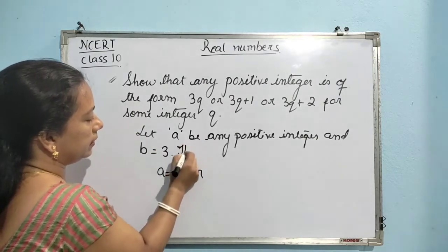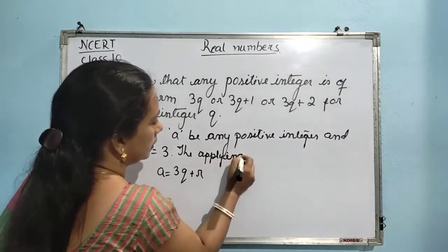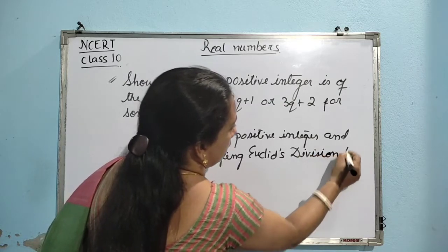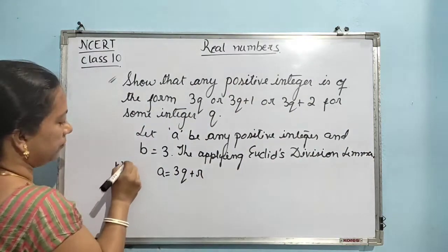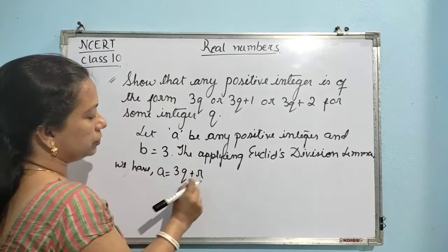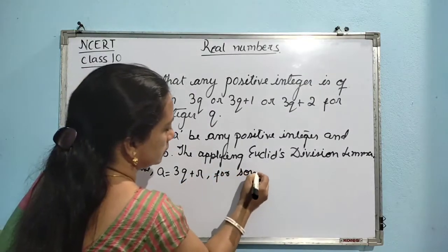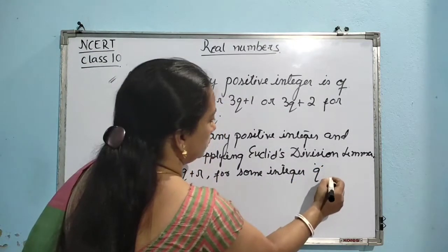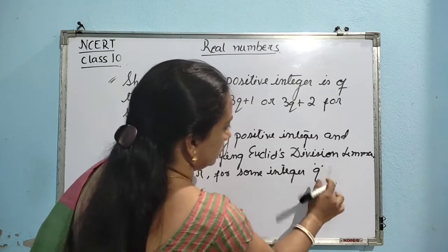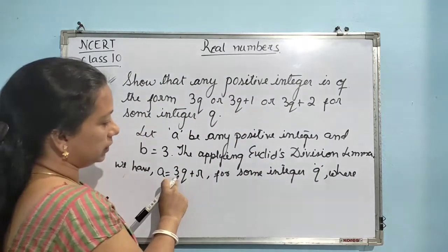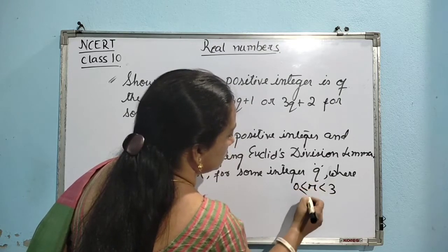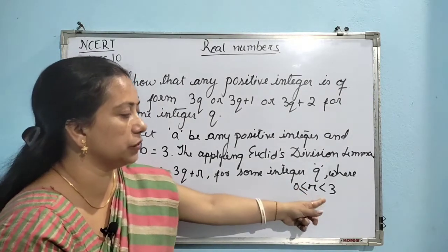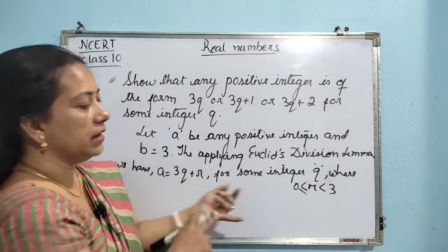then we will be getting A is equal to 3Q plus R for some integer Q and R. Applying Euclid's division lemma, we have A is equal to 3Q plus R for some integer Q. Since we have taken B to be 3, the value of R has to lie between 0 and 3, with 0 included. So what can be the values of R? 0, 1, and 2.